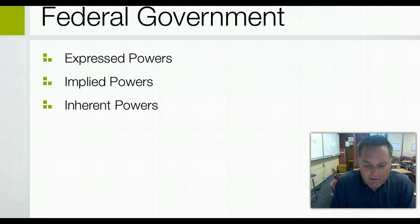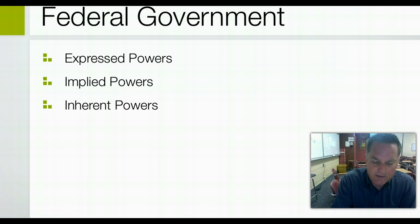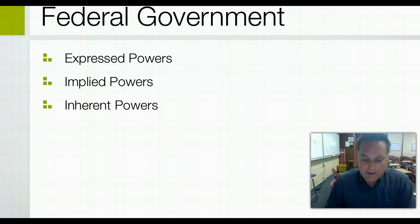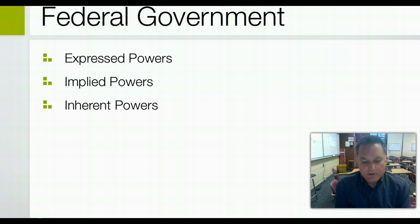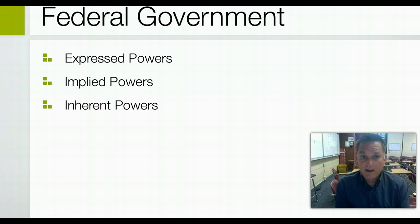Let's look at the kinds of powers that exist. The first type are delegated powers, also known as expressed powers, because they are delegated to the federal government. The Constitution grants the national government certain powers, including the war powers and the power to regulate interstate and foreign commerce. We talked about the problems with 13 different foreign policies and the weakness that could be exploited by more powerful nations.